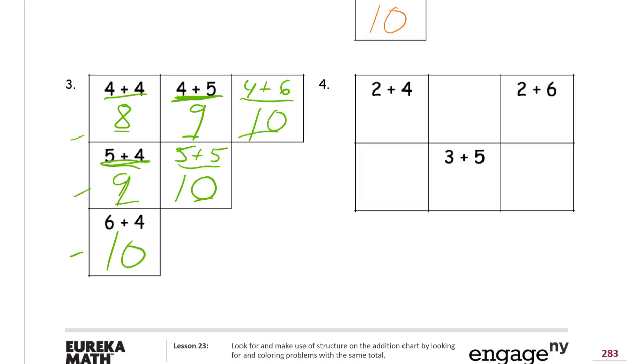And then, here's our last one. We've got 2 plus 4. So you can see, like, what's in between 2 plus 4 and 2 plus 6. Well, it's 2 plus 5. You might be able to figure that out without even looking at the chart. 2 plus 5.